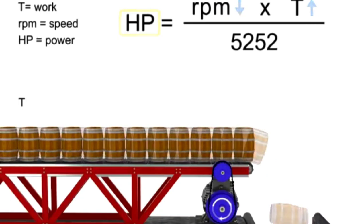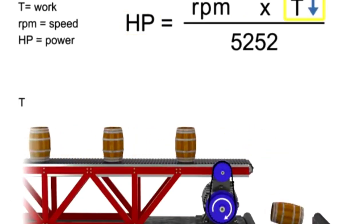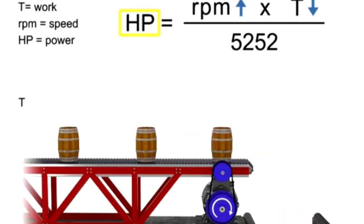Similarly, the opposite is true. If the torque decreases, the speed of the conveyor increases and the horsepower generated by the motor remains constant.